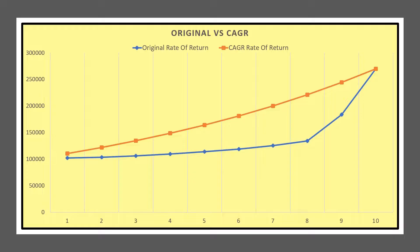This is even more clearly depicted by showing this data in the form of a graph, which compares the original data versus the data using the CAGR. Here, we see two things. Firstly, notice how the lines vary, but the ending value is the same. Secondly, the line based on the CAGR rate of return has a smoothing effect as compared to the line based on the original rate of return, because it equates the rate of return every year.